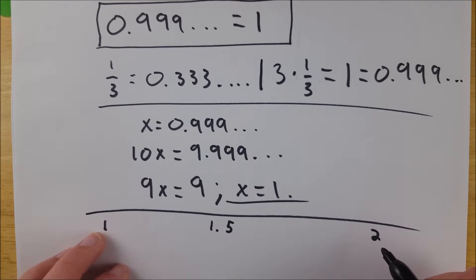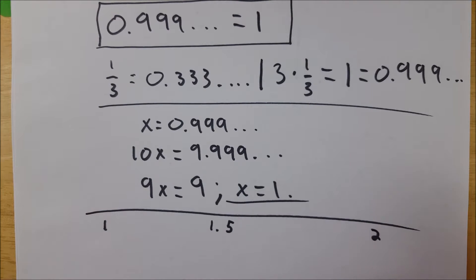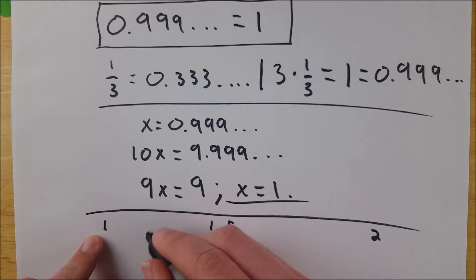For two numbers to be different, there's got to be some number between them, right? Otherwise, they're not different. They're the same number if there isn't a number between them. So these two numbers have a number between them. What about 1 and 1.5? Yeah, they've got one. Let's say 1.2. That's between 1 and 1.5.